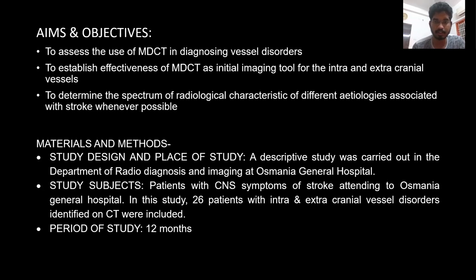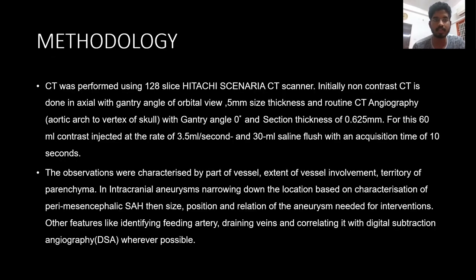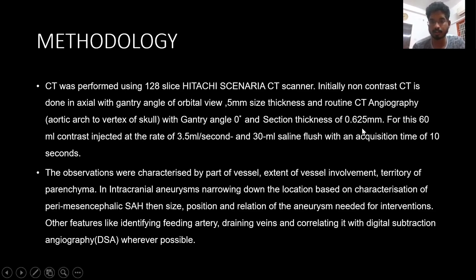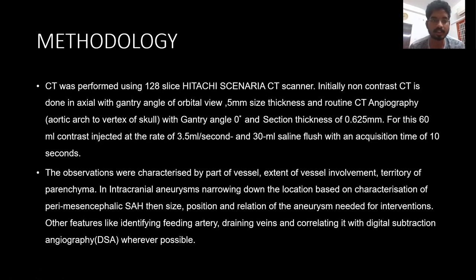Materials and methods: the study was done at Osmani General Hospital in patients presenting with symptoms of stroke. Twenty-six patients were included who were showing intracranial and extracranial vessel disorders. The CT study was done on a 128-slice scanner. Initial non-contrast CT was followed by CT angiography, performed with a collimation of 0.625 mm. Sixty mL of contrast was used, injected at a rate of 3 to 4 mL per second, followed by a 30 mL saline flush.